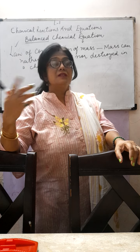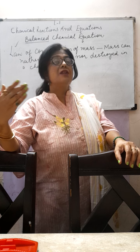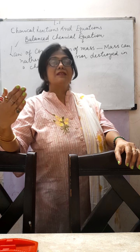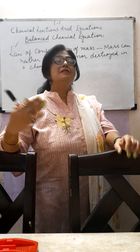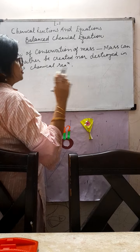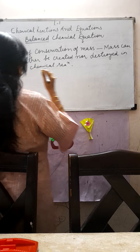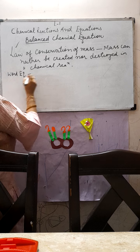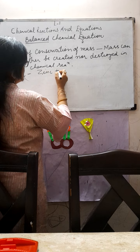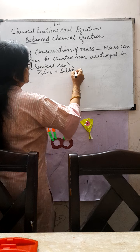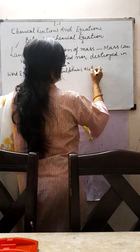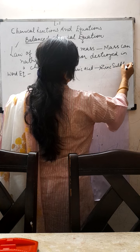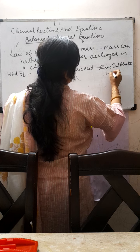What are the steps involved? This I'll cover in two to three parts in this class, because balancing needs to be understood more clearly. So first, let us take the example of the reaction between zinc and sulfuric acid. First, we write the word equation: zinc plus sulfuric acid gives zinc sulfate and hydrogen.